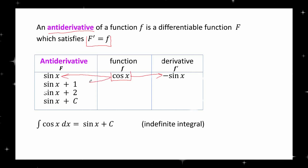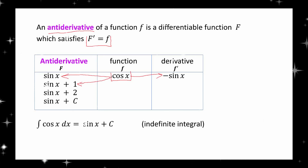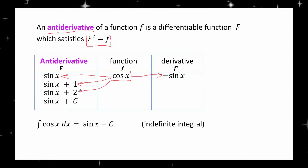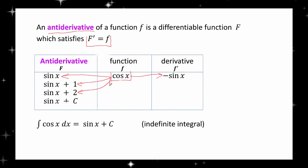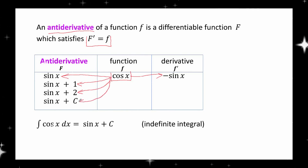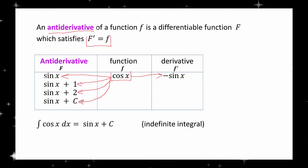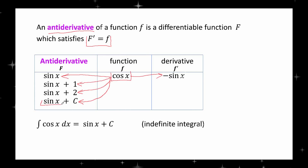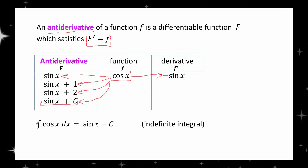Another antiderivative of cosine is the function sine x plus 1. Another antiderivative of cosine is the function sin x plus 2. In fact, if c is any constant, then the function sine x plus c is an antiderivative of cosine. Any antiderivative of cosine is of the form sine x plus c, where c is a constant.